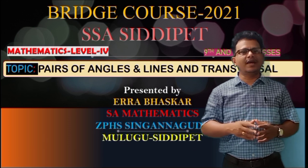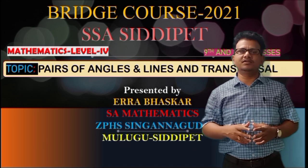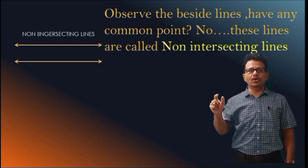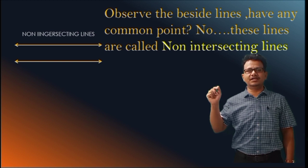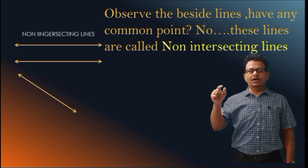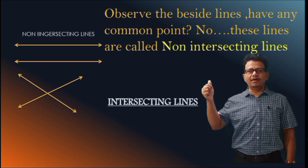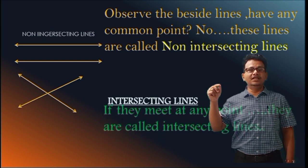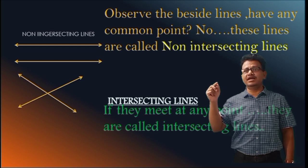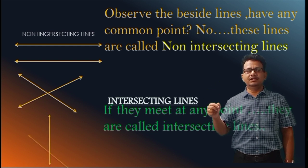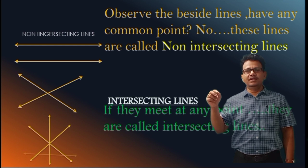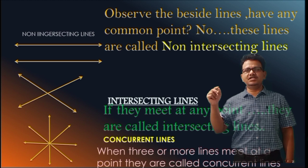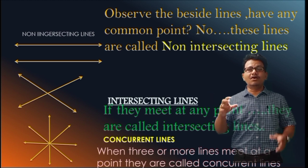The subtopic is Pairs of Angles and Lines and Transversal. Observe the beside lines — do they have any common point? No, these lines are called non-intersecting lines. Now observe the 2nd figure — do they have any common point? Yes, these 2 lines are meeting at 1 point. If any 2 lines meet at 1 point, these lines are called intersecting lines. Now look at the 3rd figure: 3 or more lines meet at 1 point. These type of lines are called concurrent lines.